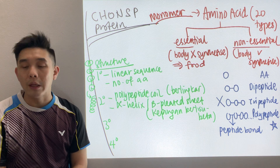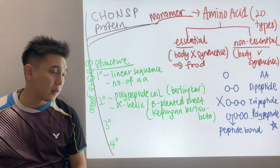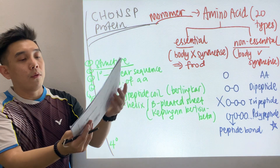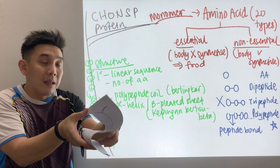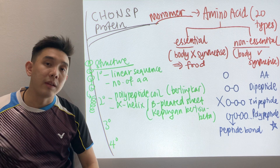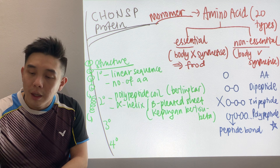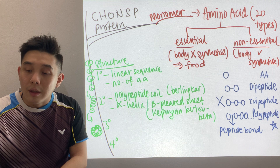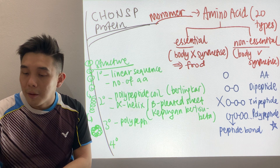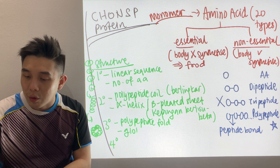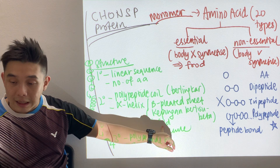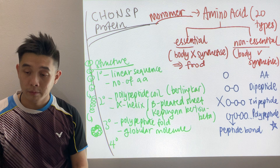Beta pleated sheet is like folded — something like folded once, twice — that's the beta pleated shape. Most of the time books show the alpha helix. Now for the tertiary structure, the polypeptide will fold. When the polypeptide folds, we get a globular molecule — 'molekul globular'.